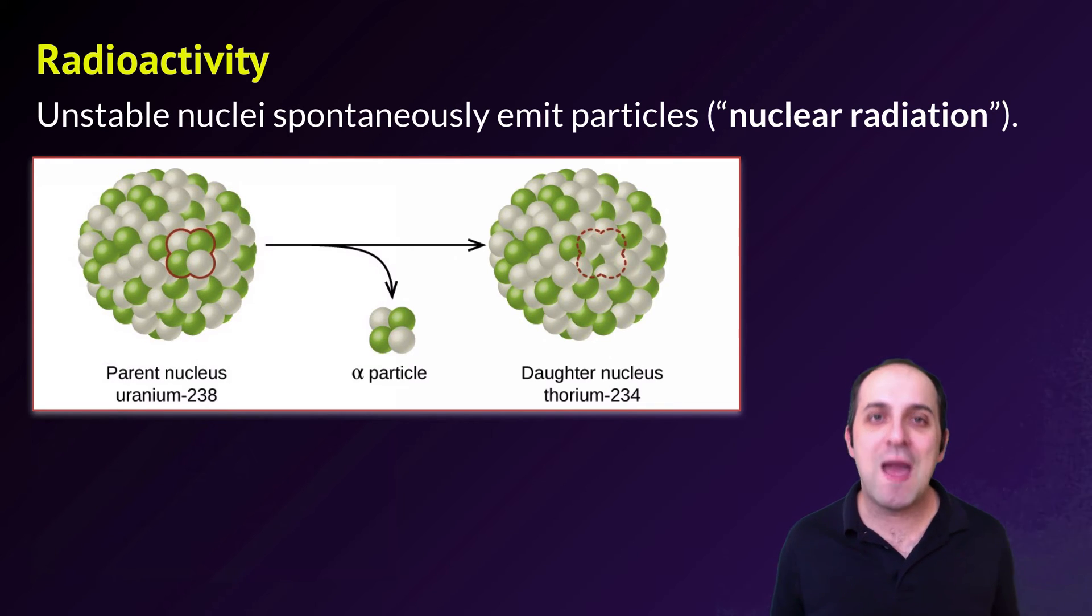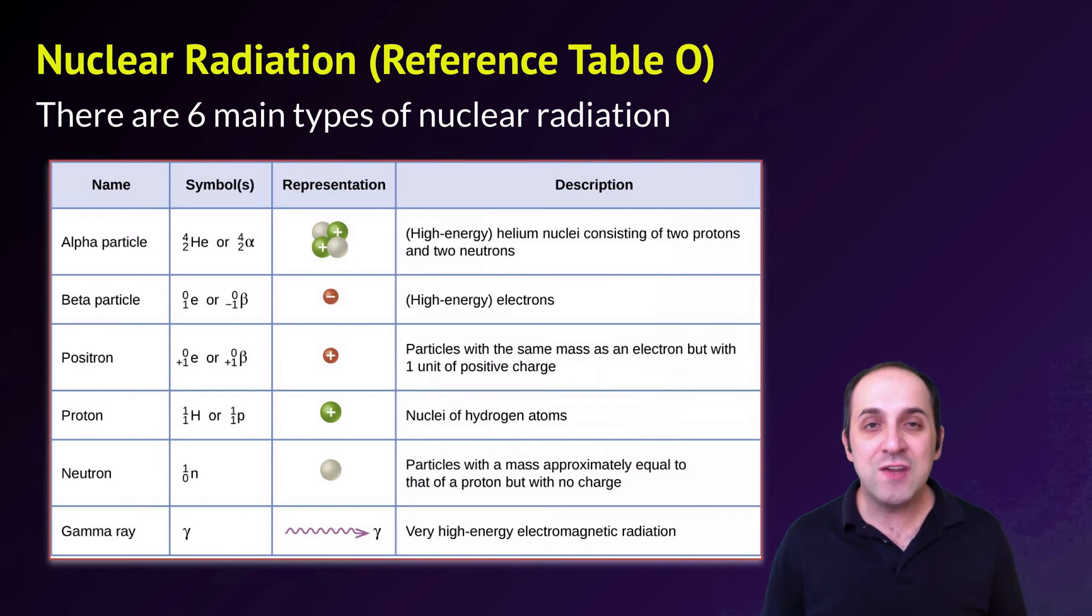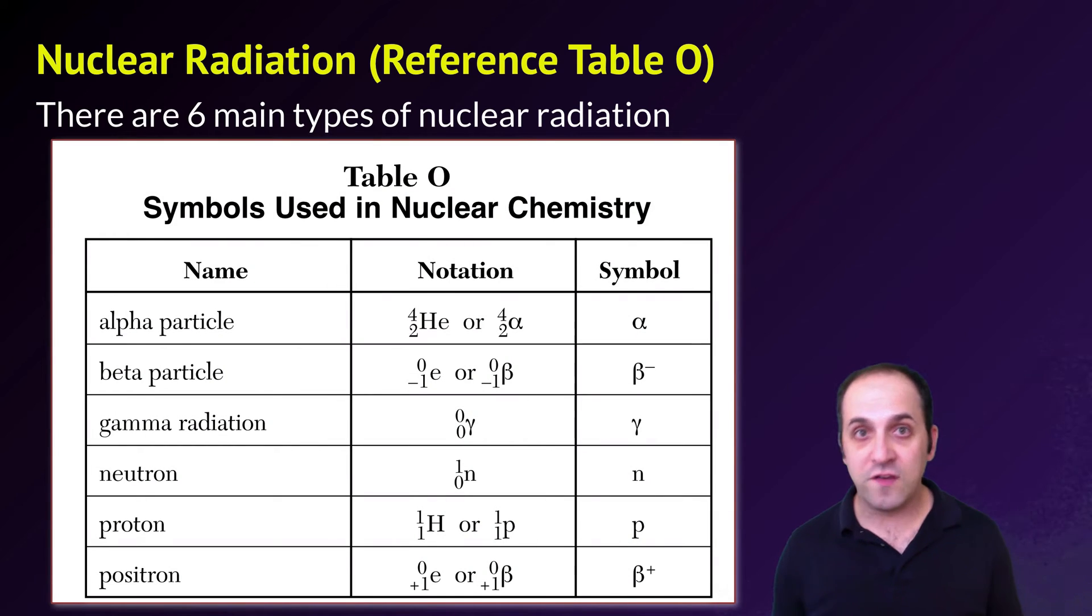In the example of this uranium atom, it's giving off an alpha particle, which is one form of nuclear radiation. There's actually six major types of nuclear radiation, and these are given to you on reference table O. This is actually not reference table O. This is a more graphical representation of reference table O, but this shows the six major types of nuclear radiation. This is the way it looks on reference table O, and you can see the same six types of nuclear radiation. And all of these are emissions that come from the nucleus of the atom. It will produce these emissions as the nucleus breaks down.